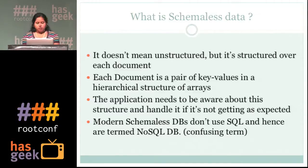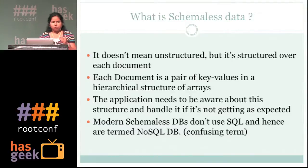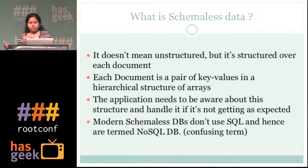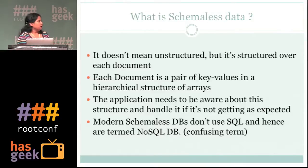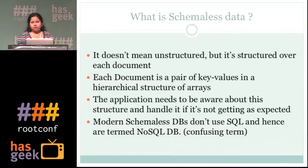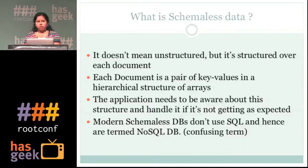The application needs to be aware about what kind of data you are going to store. It can be dynamic whenever it is being stored as a document, because one document's data can be completely different from another. For example, the first document may have five keys while the second can have 25 keys. Your application should be aware about what keys you are going to store in your document.